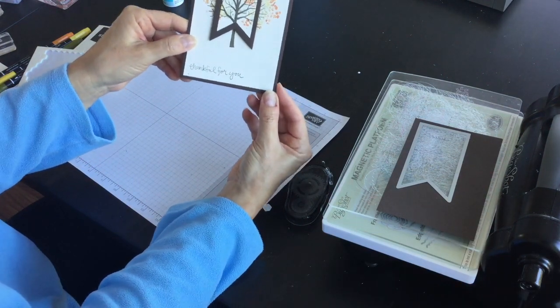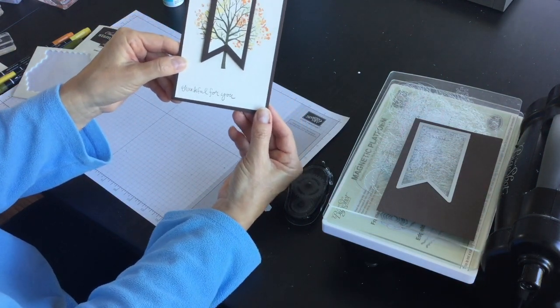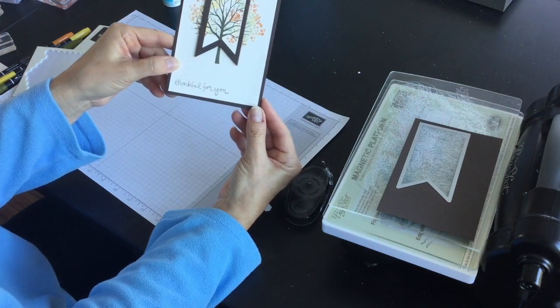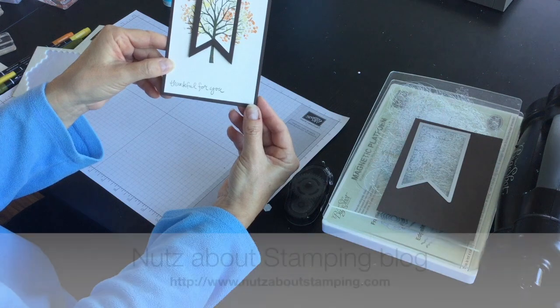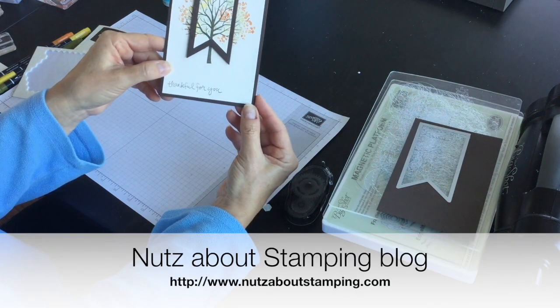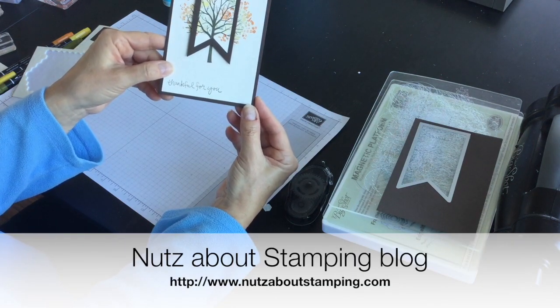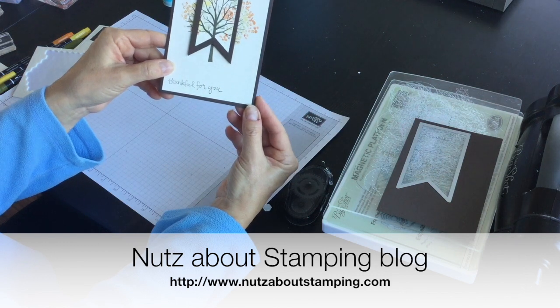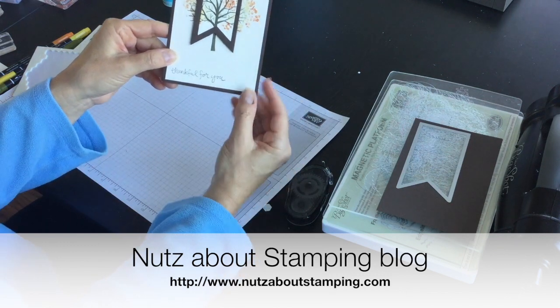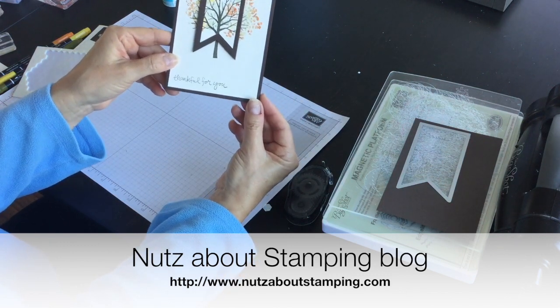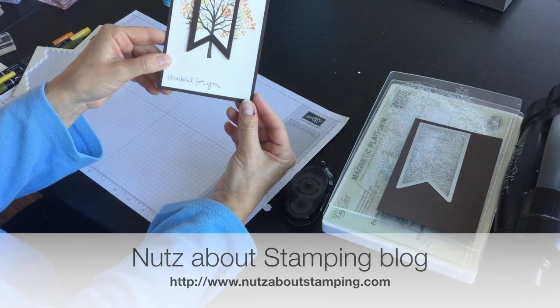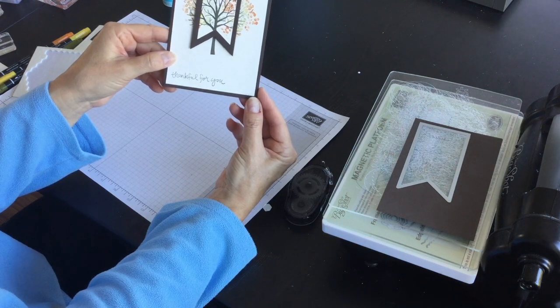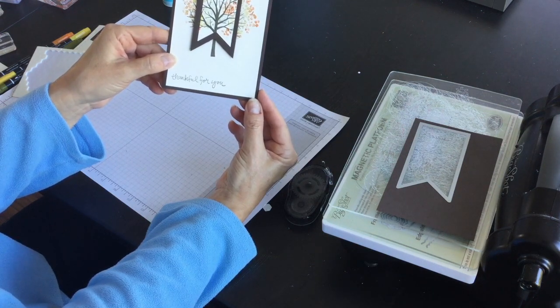For a complete listing of the supplies that I used and the measurement for the card stock layers hop on over to my blog www.nutsaboutstamping.com. While on my blog you can subscribe to my newsletters. I send a free newsletter each week with a completely exclusive idea you won't see it anywhere else. You can find a shop now button on my blog so you can place an order for the products I used to make this card or just look through lots of other sample ideas. I try and post several new ideas each week.